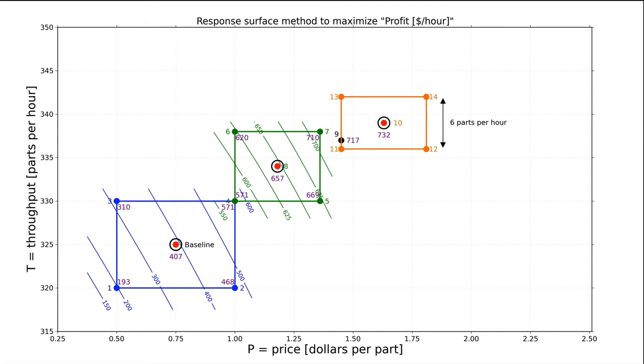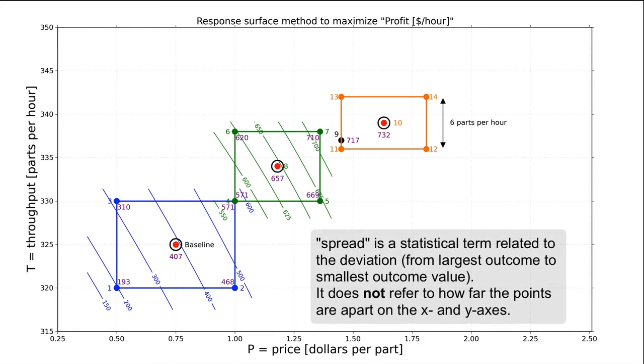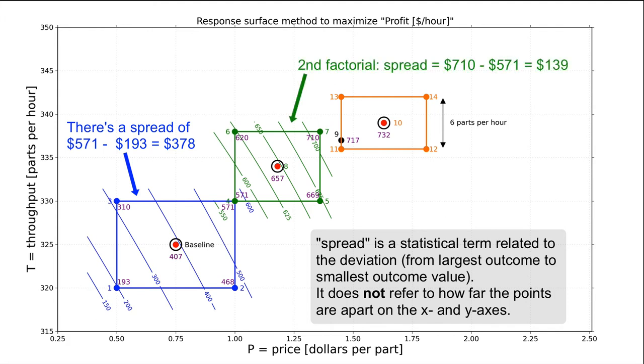First, we're coming close to our upper bound of 350 parts an hour. In case there's an optimum near this bound, we will see in the next video, we should have a bit of room to move outside the factorial bounds to fit a non-linear model. Secondly, we might suspect we're leveling off. And the way I can see this is by looking at the spread in the profit values in the first factorial. See how far apart they are over there, and here in this second factorial they're closer together. That reduction indicates there might be a leveling off, and we don't want to overshoot the optimum by taking too large a step.